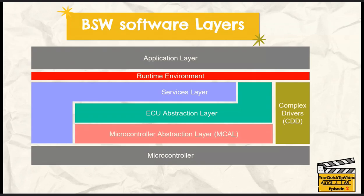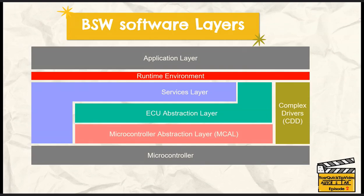Think of it like building with Lego blocks. Each block has a specific role, making it easier to swap or upgrade parts without redoing everything. This makes our system more flexible, easier to maintain, and reusable. The basic software is divided into these sub-layers to modularize and standardize the software components. This modularity allows for better abstraction, easier maintenance, and greater flexibility. Each layer focuses on a specific aspect of hardware interactions and system services. By doing so, AUTOSAR promotes reusability and scalability, making it easier to develop and integrate complex automotive software systems.